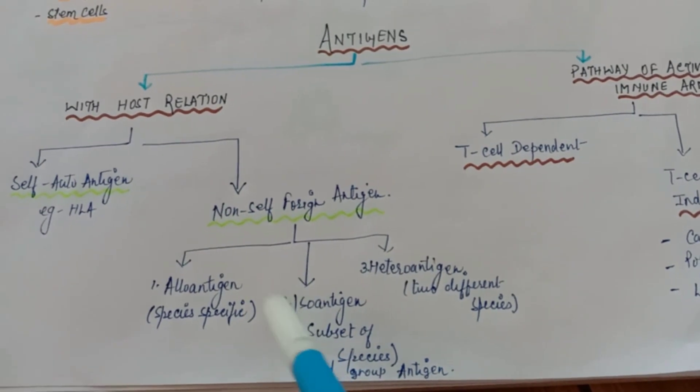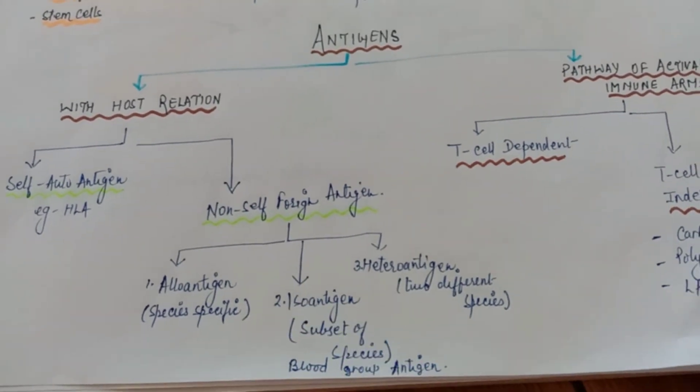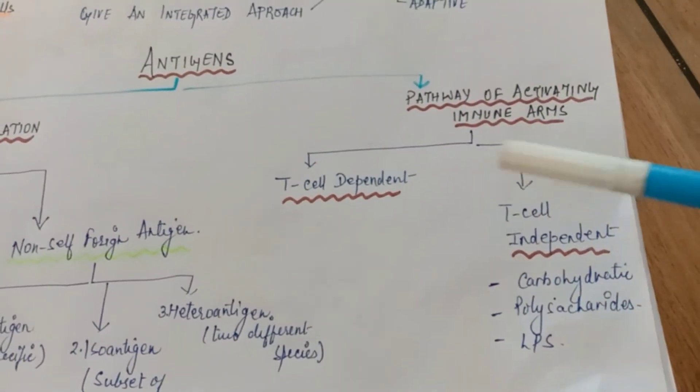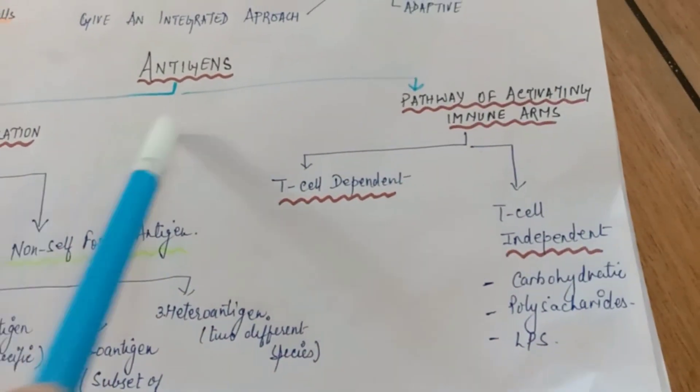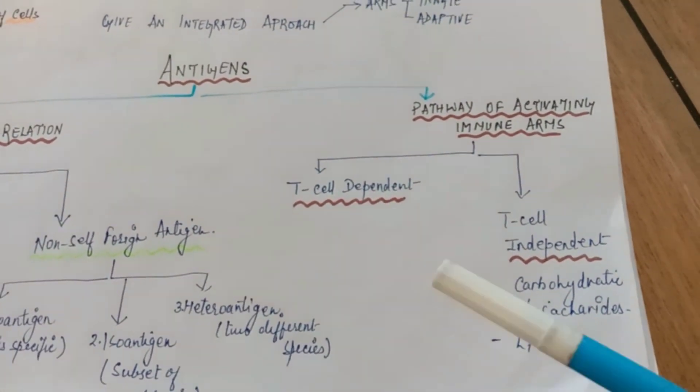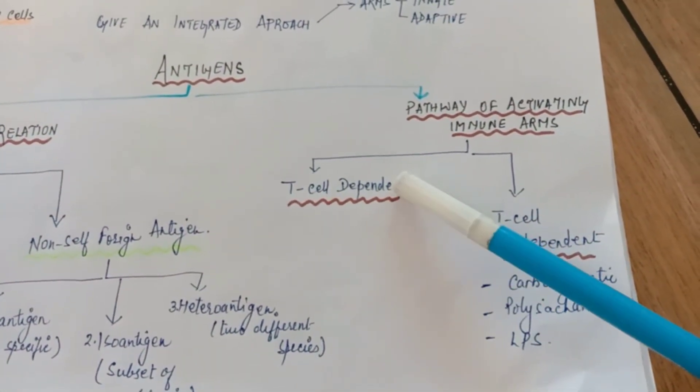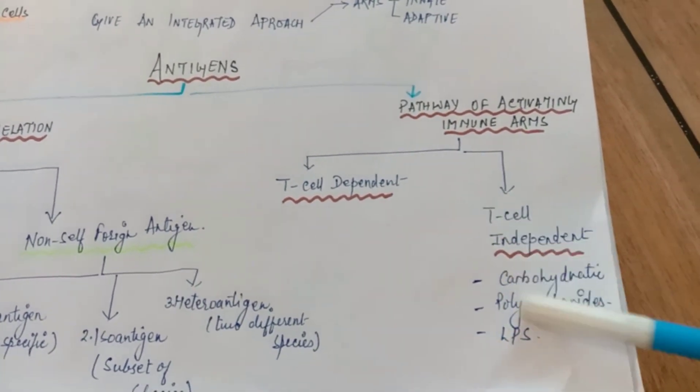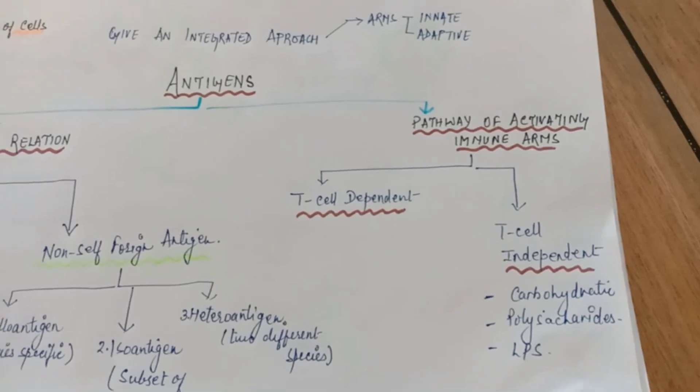Then we have pathway of activating immune arms. Antigen on the basis of pathway of activating the immune arm: first is T cell-dependent and second is the T cell-independent. Various examples we'll see later.